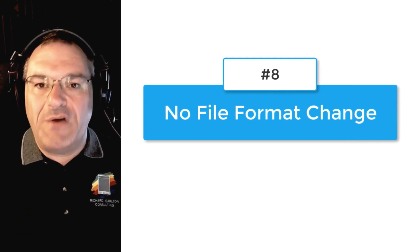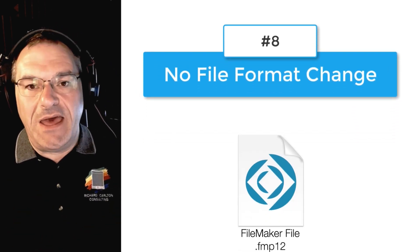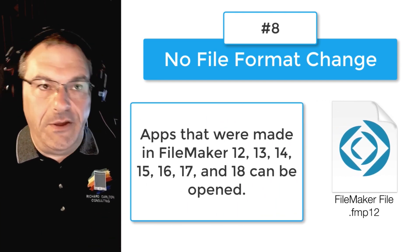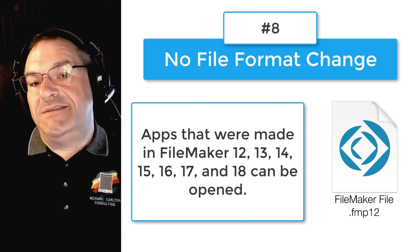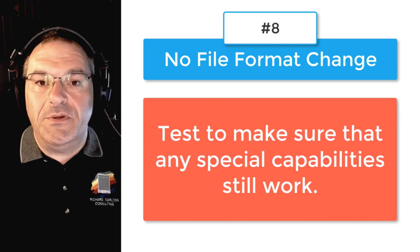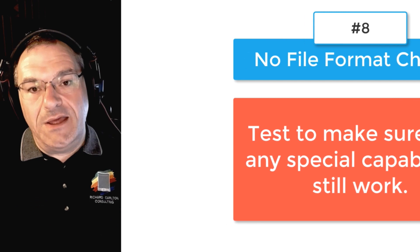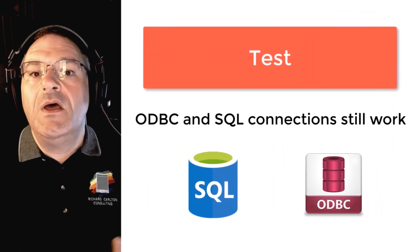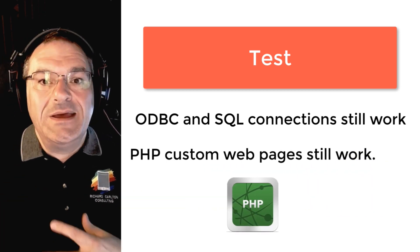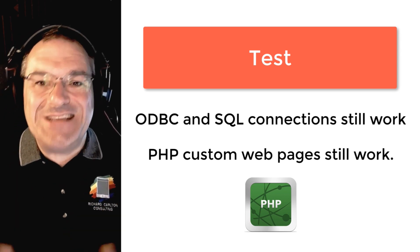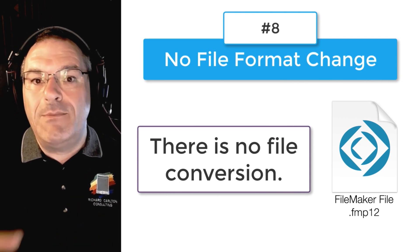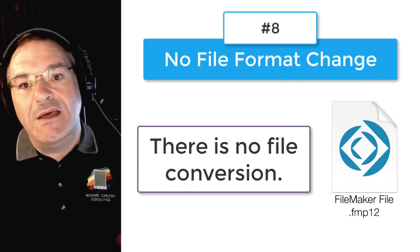Number eight: there is no file format change with the 19 release. It's still FMP12, which means that if you have a FileMaker solution that was working in FileMaker 12 through 18, it should work on FileMaker 19. Of course, you want to test to make sure any special capabilities are working as expected — particularly ODBC or SQL data source connections, and any PHP custom web pages talking to FileMaker. That said, there is no file conversion required. FileMaker 19 can read the same FMP12 file we've had since FileMaker 12.